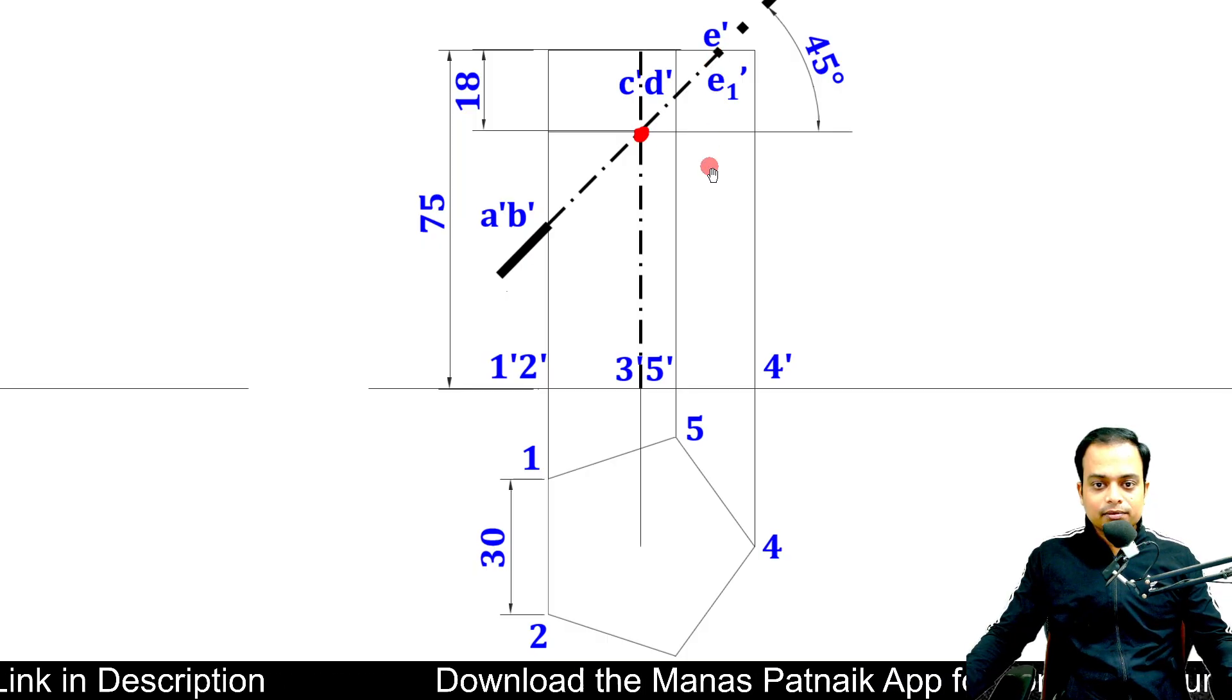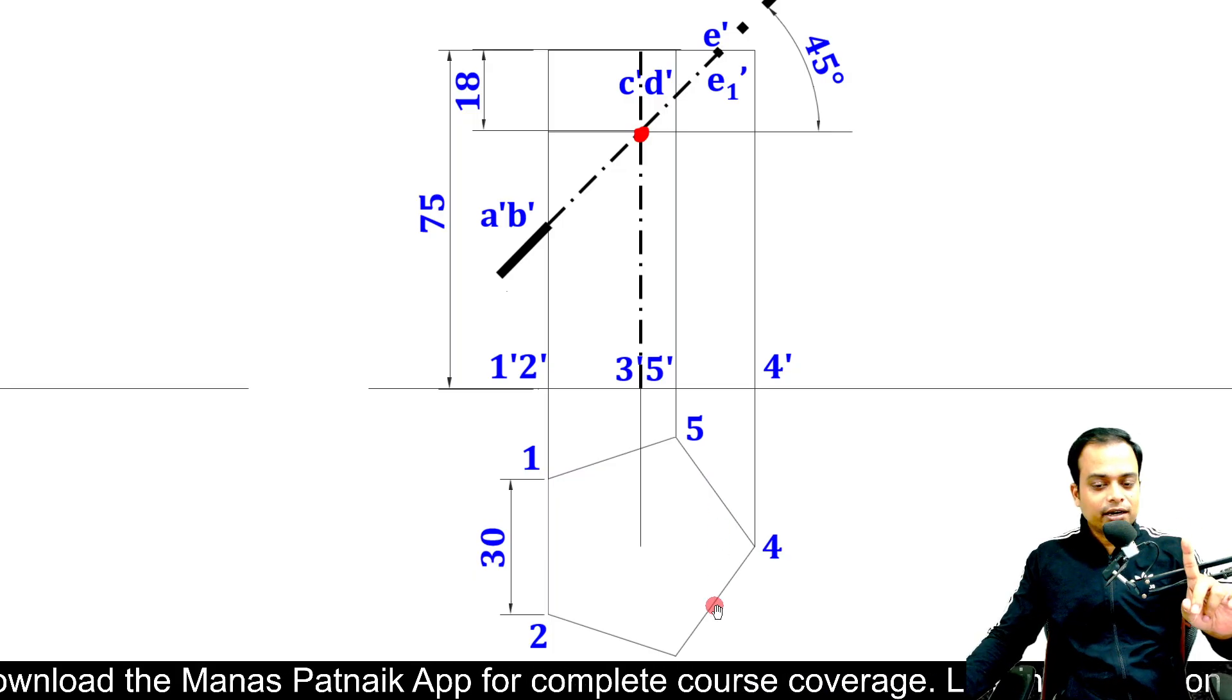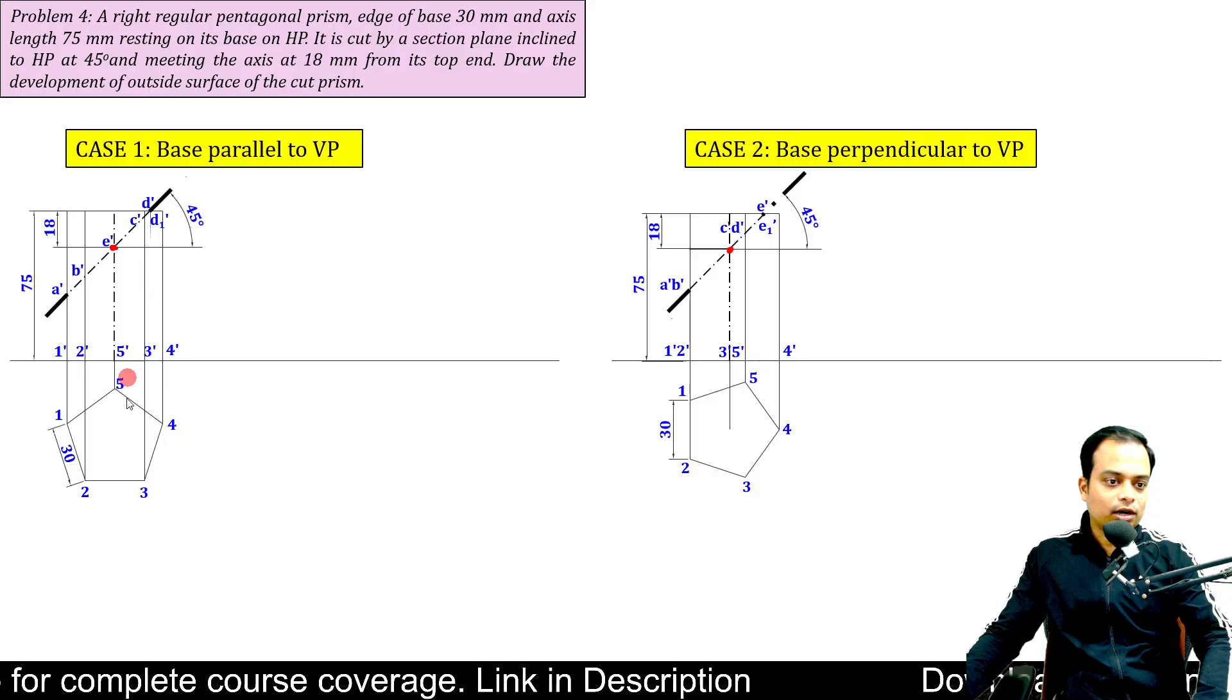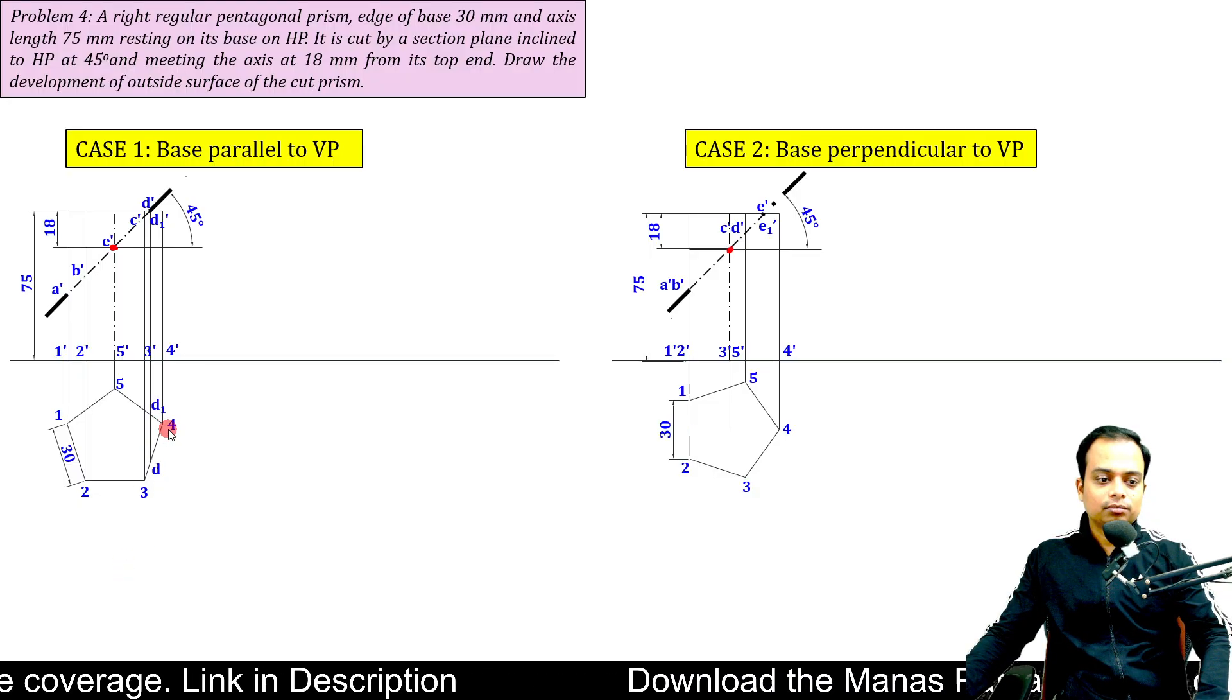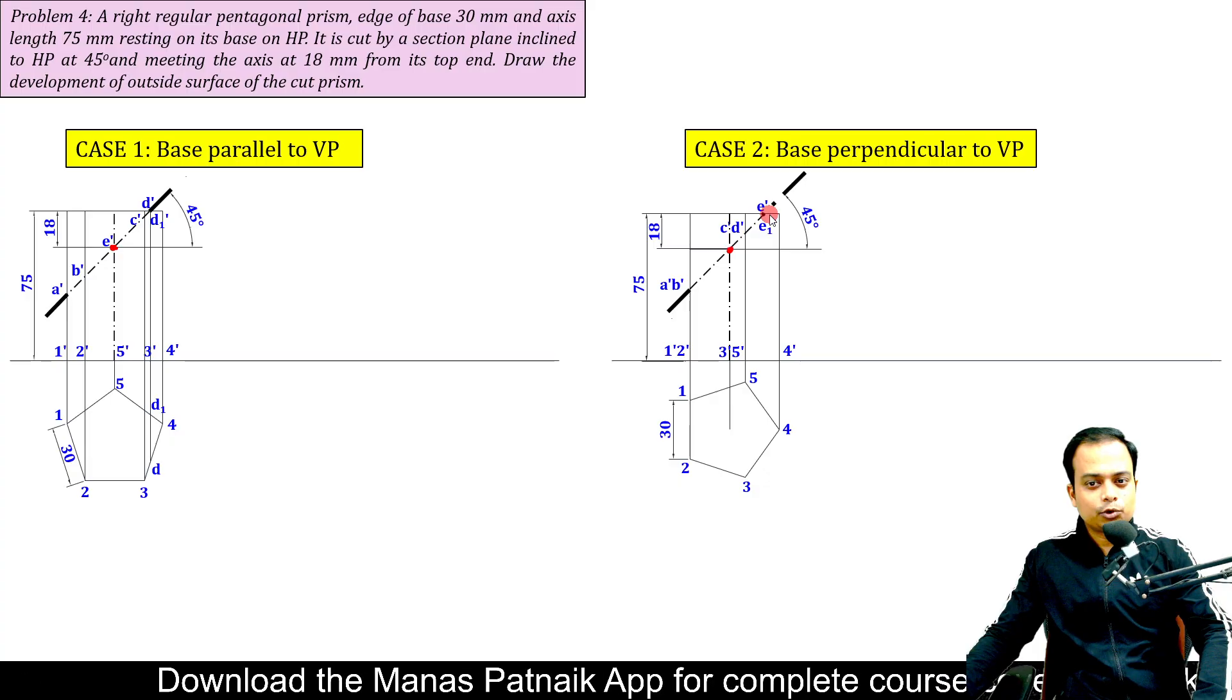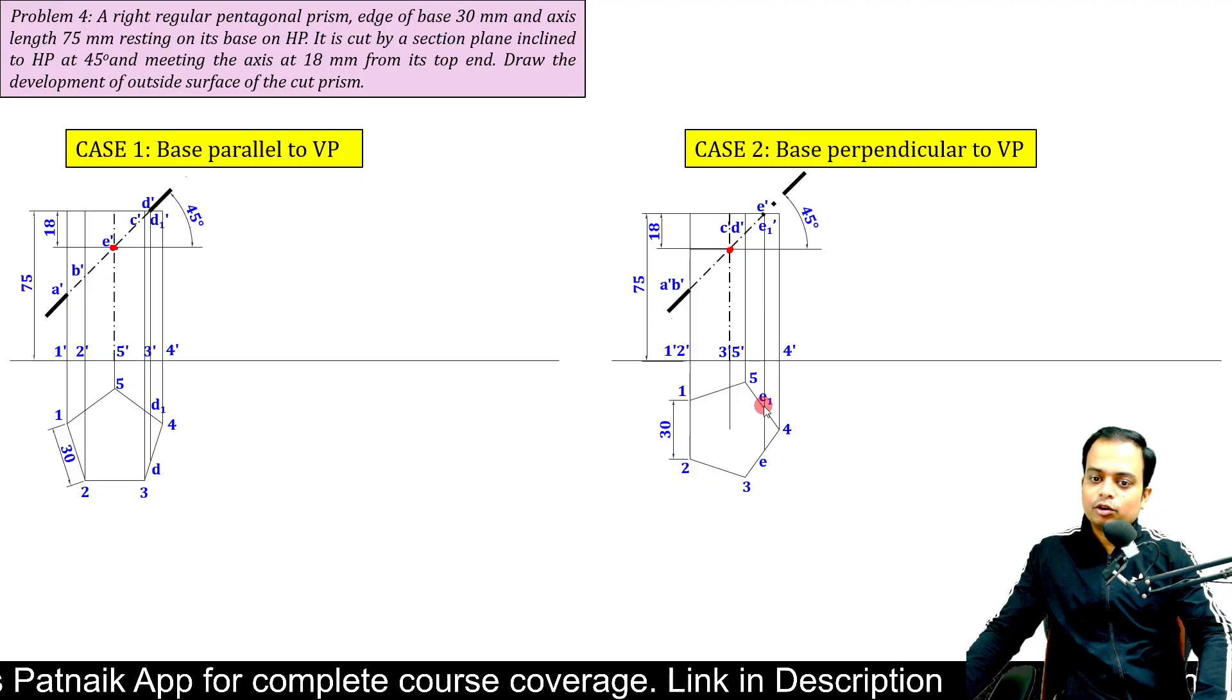Now, if I draw a line through this E dash, E one dash, you will realize that at the topmost pentagon, there are going to be two cutting points. One is E, while the other is E one. I think right now, let's focus on this D dash, D one dash. Let me draw a line this way. D, D one. Between three, four, that is D. Between four, five, we've got point D one. Just produce a line through this E dash, E one dash. So, between three and four, you've got point E. And between four and five, we've got point E one.